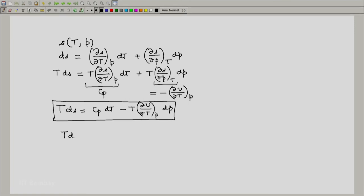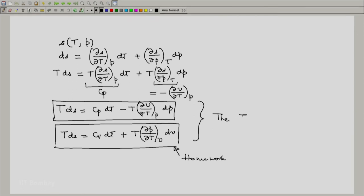The result should be TDS is Cv dT plus T into partial of P with respect to T at constant V dV. So the second relation is to be derived as homework, and these two relations are known as the TDS relations. Thank you.